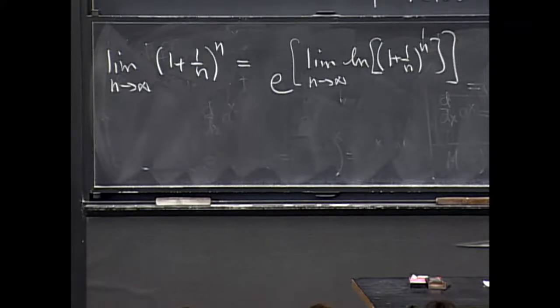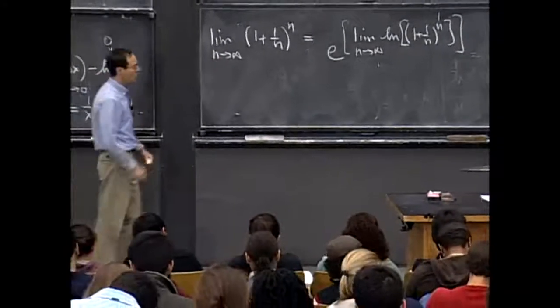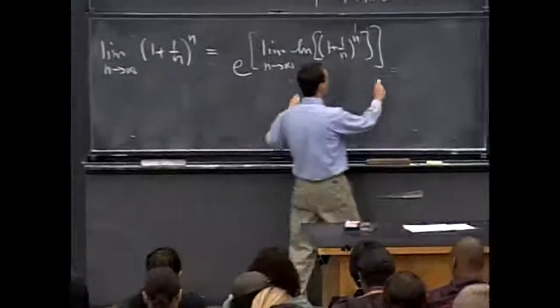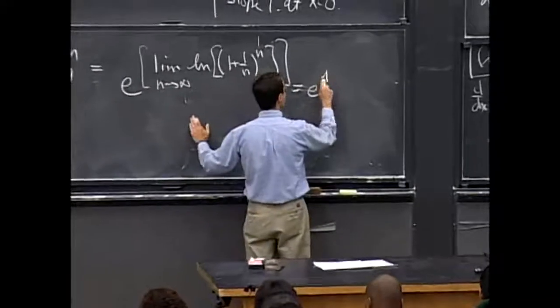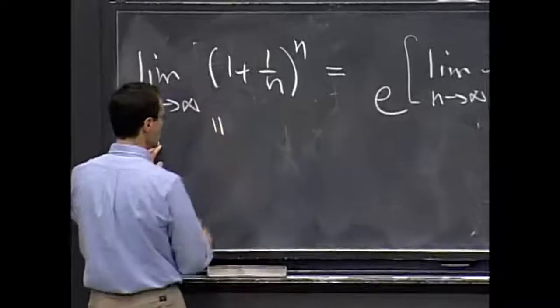OK, so I take the logarithm, I take the exponential. That just undoes what I did before. And so this limit is just 1. So this is e to the 1. And so this limit that we want here is equal to e.